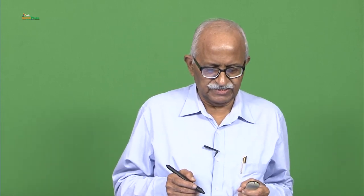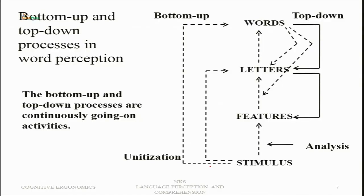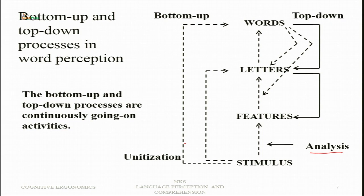In word perception, from stimulus the bottom-up processes go: stimulus → features → letters → words. Unitization is a process at the level of letter-to-word analysis. Unitization achieves automation in processing and permits binding of features together, giving rise to a meaningful word. A distinction between word and non-word can be made from context, and top-down processes operate at all levels — words influence letters, letters influence features — and with experience these processes become automatic and parallel, allowing us to achieve the meaning of the word.